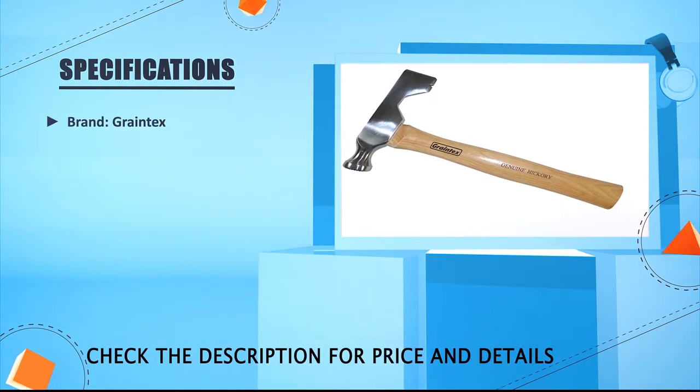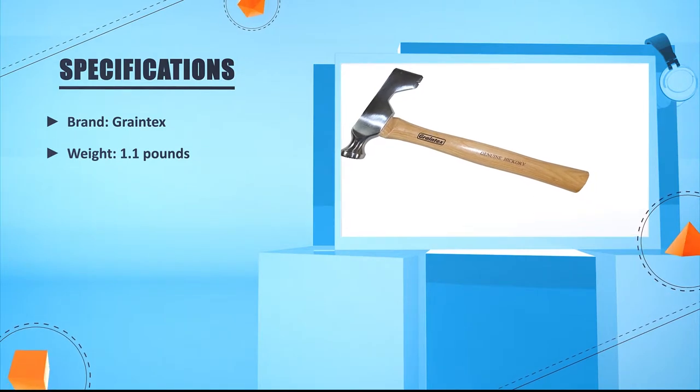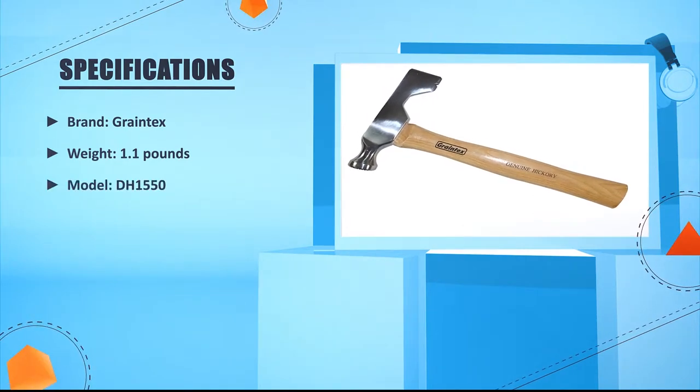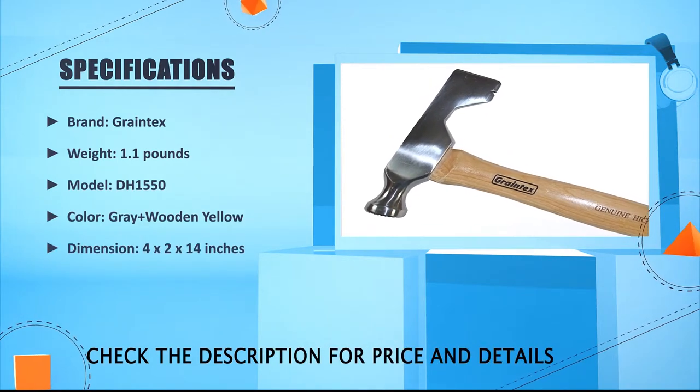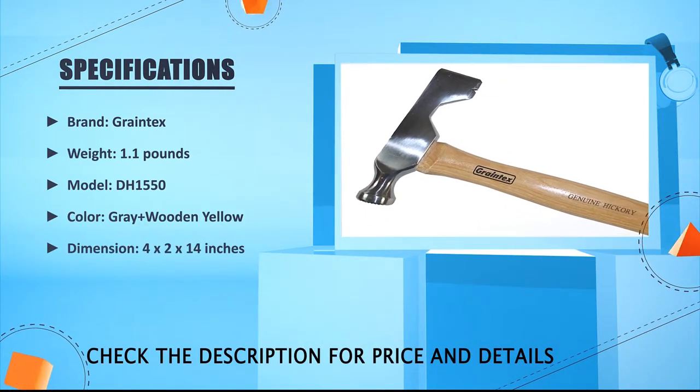Brand: Grain Tex, Weight: 1.1 lb, Model: DH1550, Color: Grey Plus Wooden Yellow, Dimension: 14 x 2 x 2 inches.